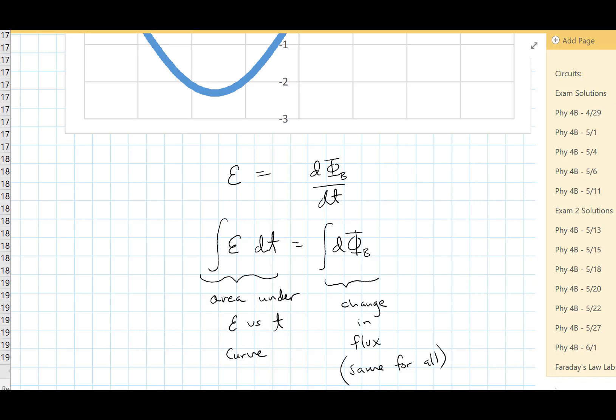Now the change in flux should be the same for all of our runs. And the reason is that the magnet, if it starts high enough above the coil of wire, there's basically no magnetic flux going through the coil of wire. Now if we start too low, if we start with a magnet just a little bit above the coil of wire, some of the flux is already going through the wire.